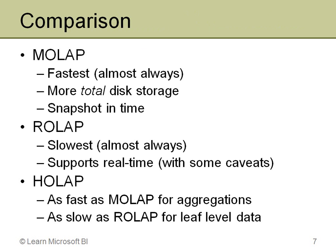MOLAP is almost always the fastest way to go. It is designed for extremely high performance — it builds aggregations as physically stored structures, not just indexed views that have to be calculated on the fly. The downside is that it uses more total disk storage.